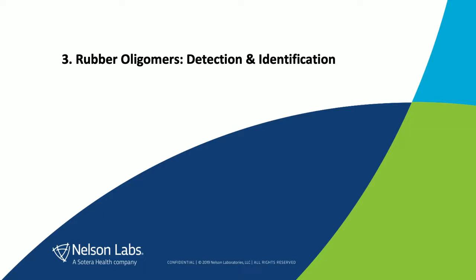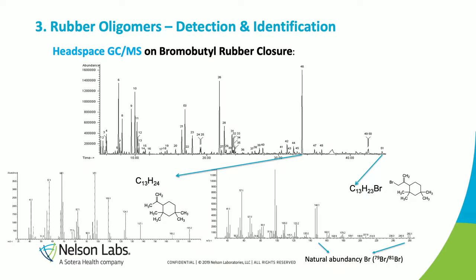How do we detect those oligomers? That is typically with headspace GCMS for the more volatile oligomers. This is a typical chromatogram you will see if you perform headspace GCMS on a rubber — for instance, on a neat rubber where you heat the rubber and identify every compound released. Compound 46 relates to the C13 oligomer that is not brominated, with the molecular ion at 180 daltons. At the very end of the chromatogram, you see the brominated C13, which has a molecular ion of 260. Because of the natural abundance of bromine, you can confirm there is one bromide in the elemental formula of the oligomer.